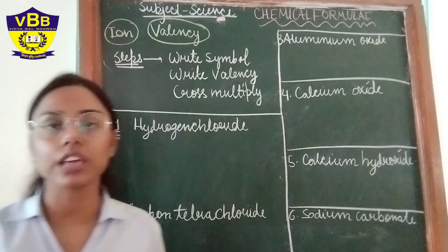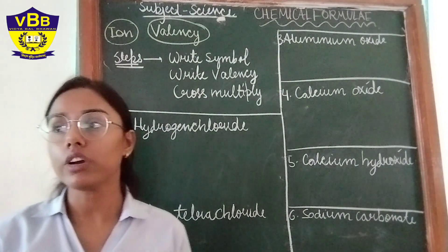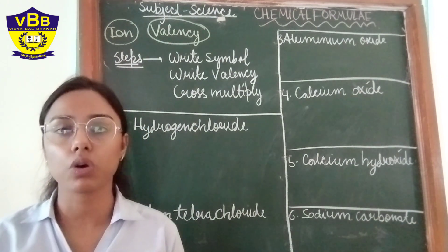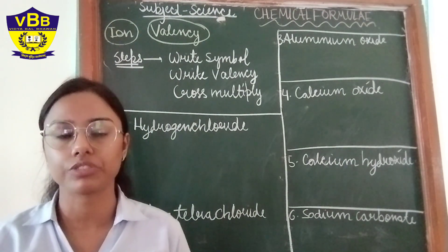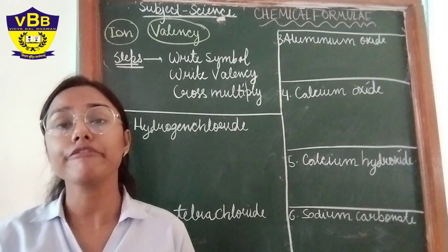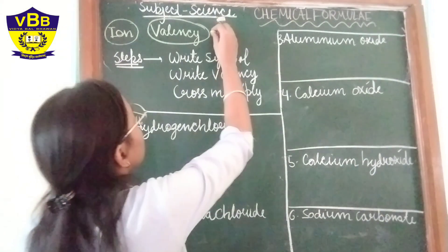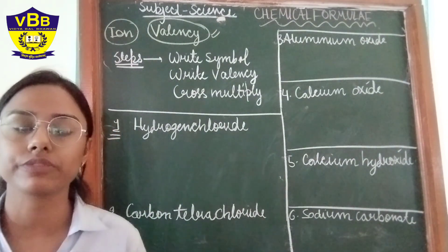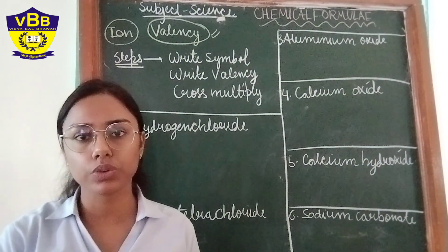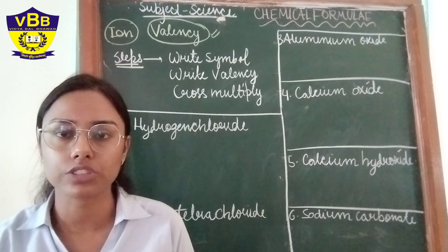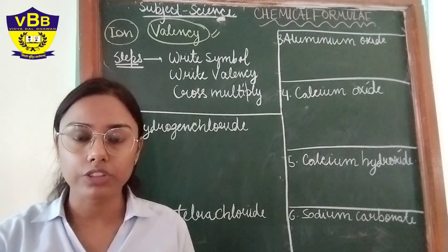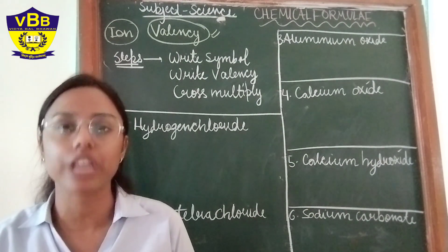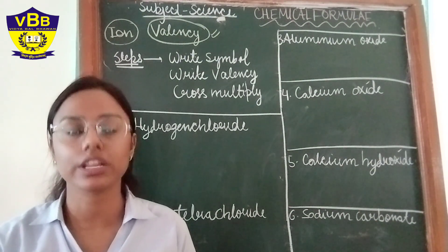Now let's understand how to write a chemical formula. Before that, we should know all the symbols of the general elements and their valency. Valency is the combining capacity of an element, and it depends on how many electrons are present in the valence shell of that atom or element.